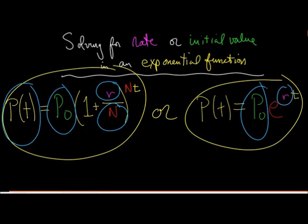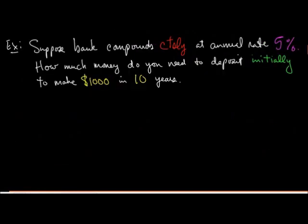So let's get to an example. Here's what I'm talking about. So suppose that you have a bank that compounds things continuously, and it does it at an annual rate of 5%. Okay, this is something you know and they tell you beforehand. And here you are. You want to figure out how much money do you actually need to deposit in the bank initially, okay, in order to make $1,000 in 10 years. So you see a lot of information was given here.